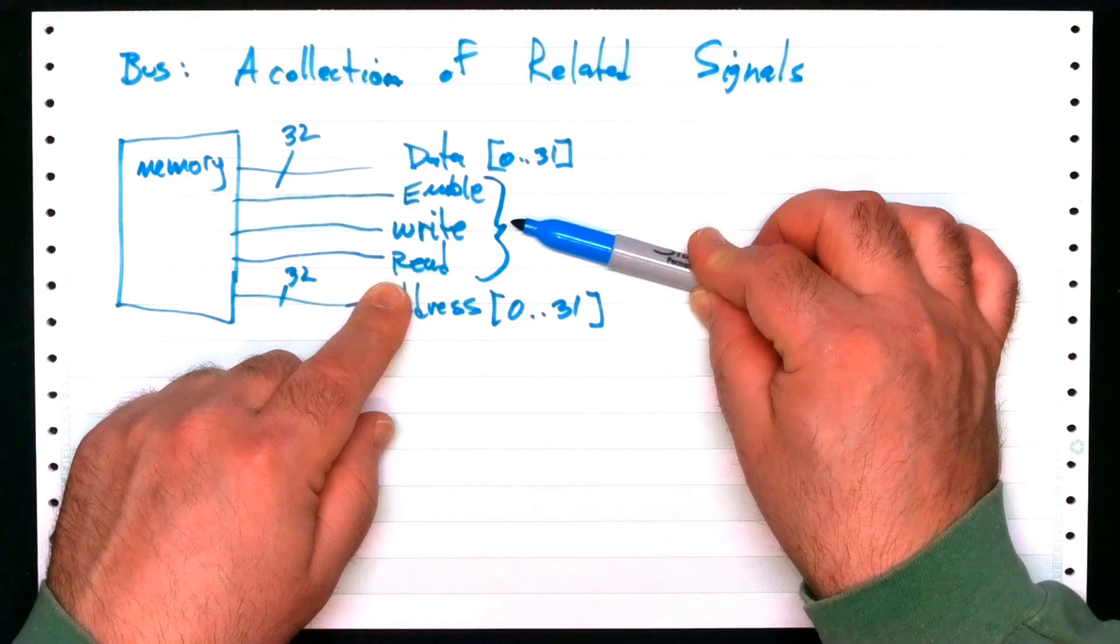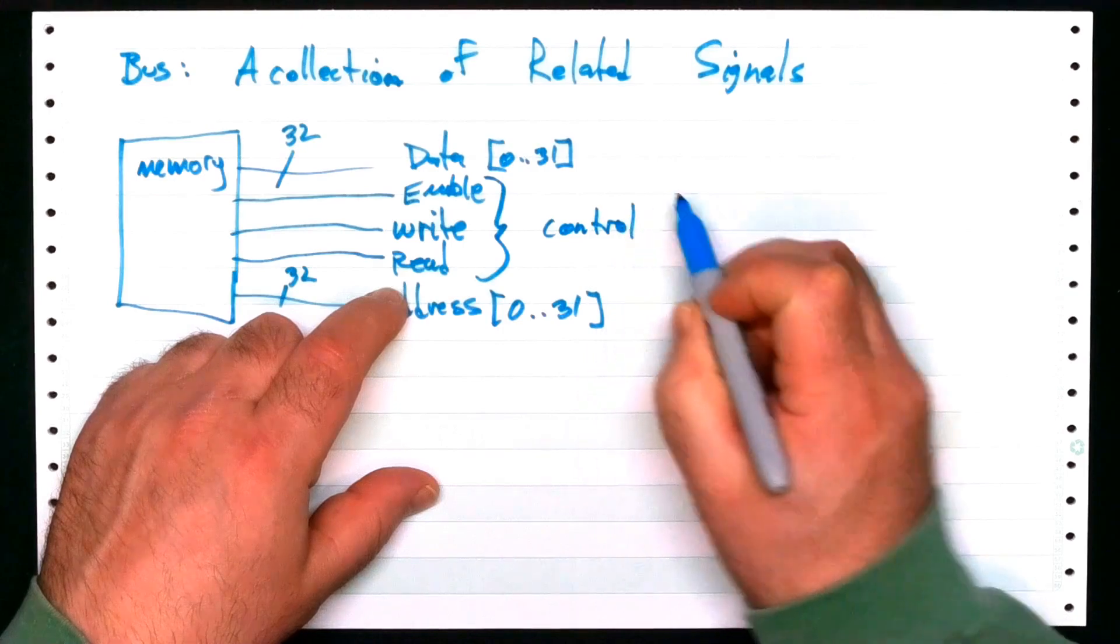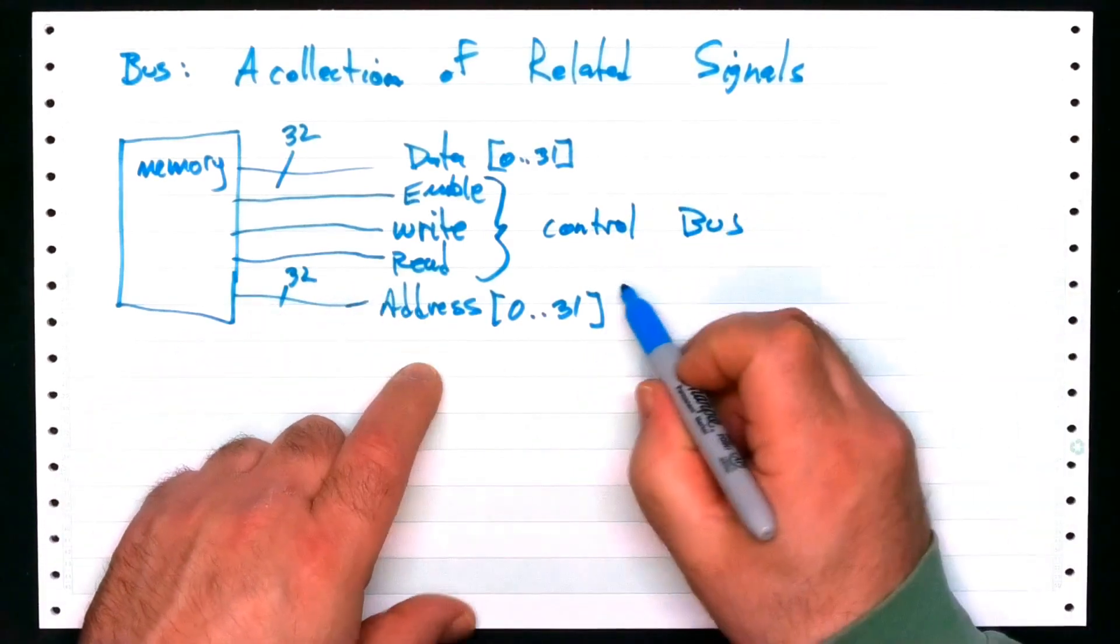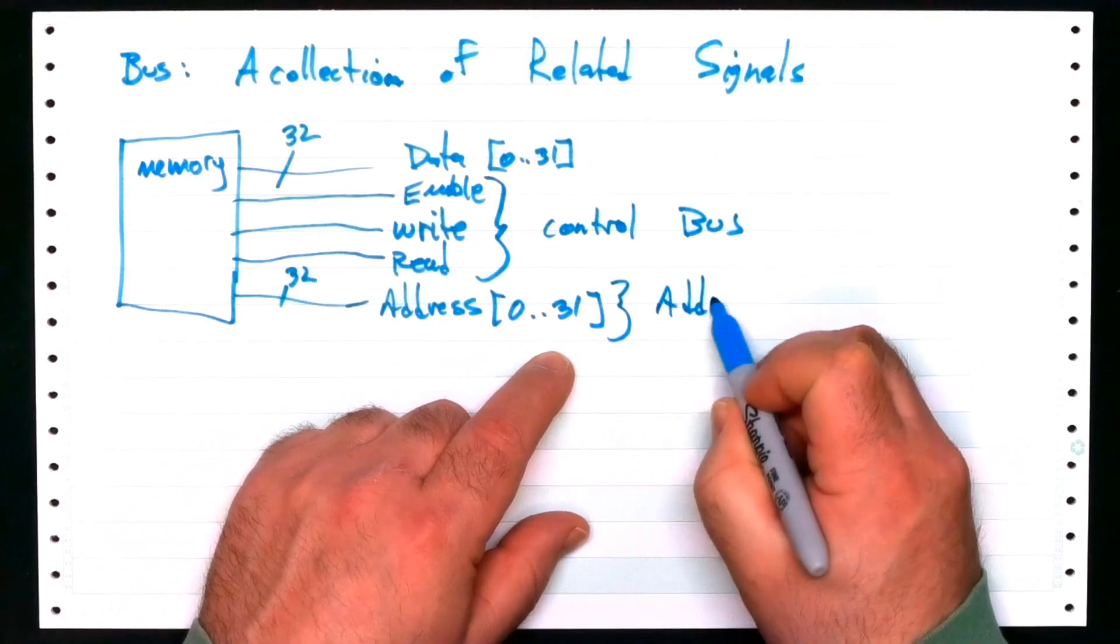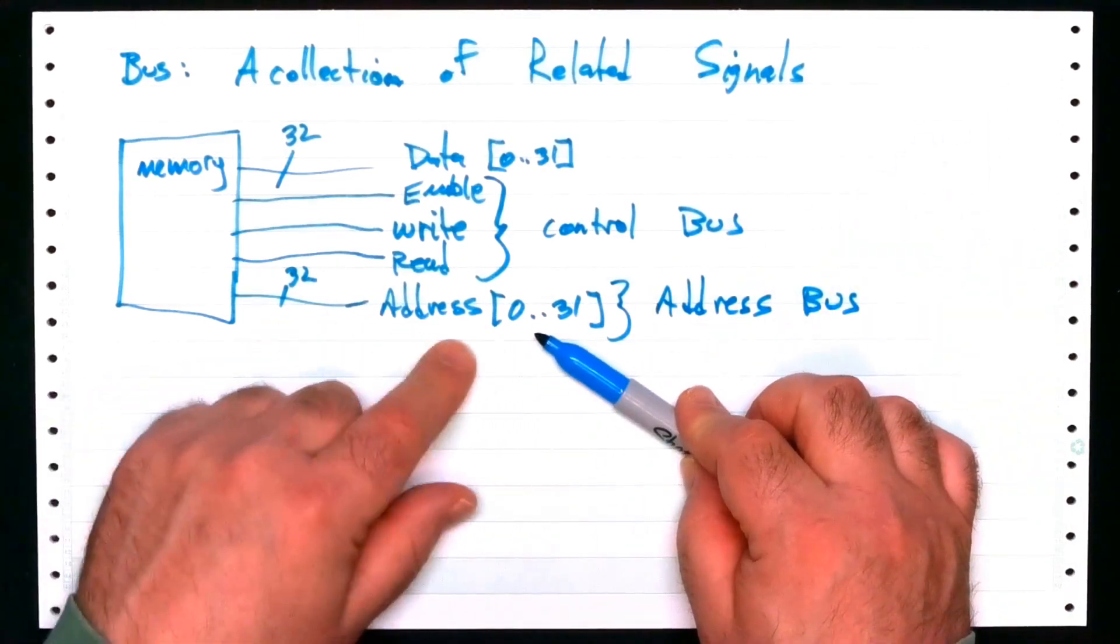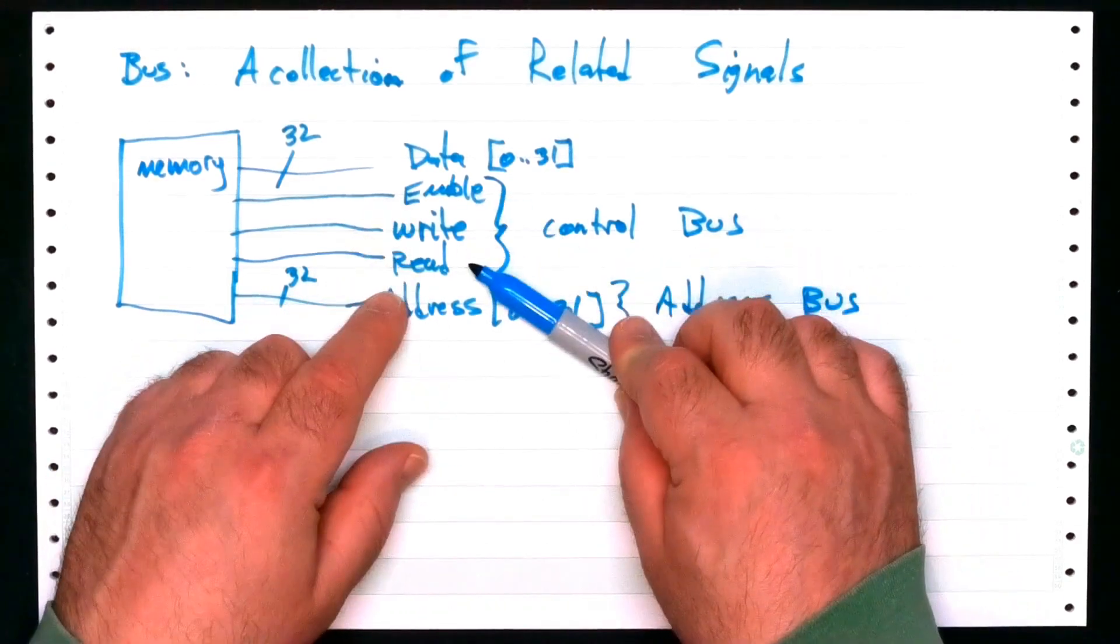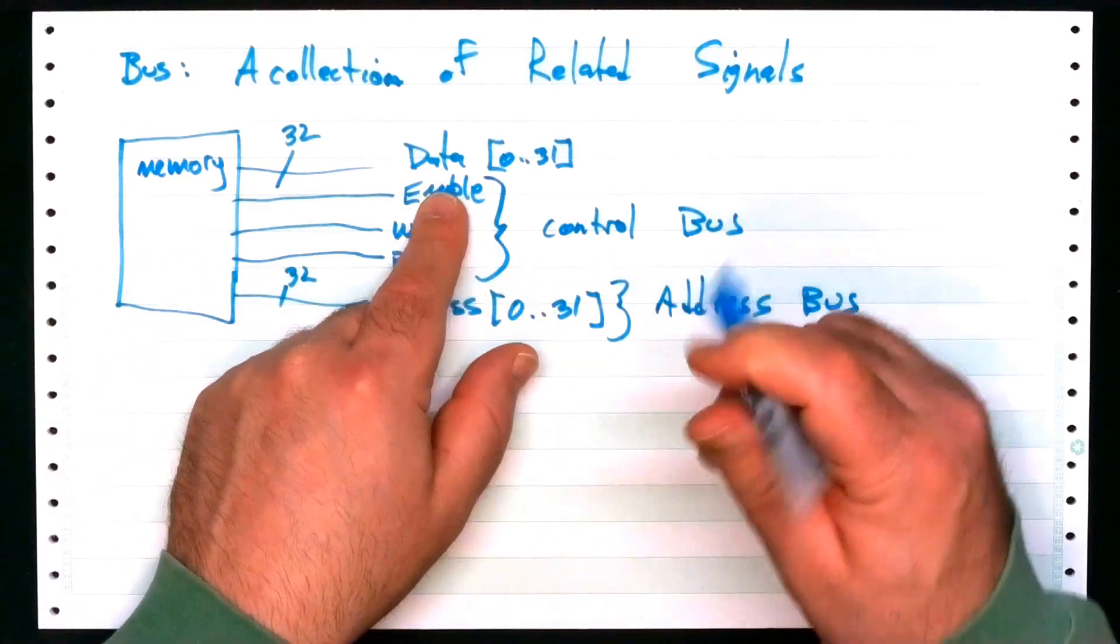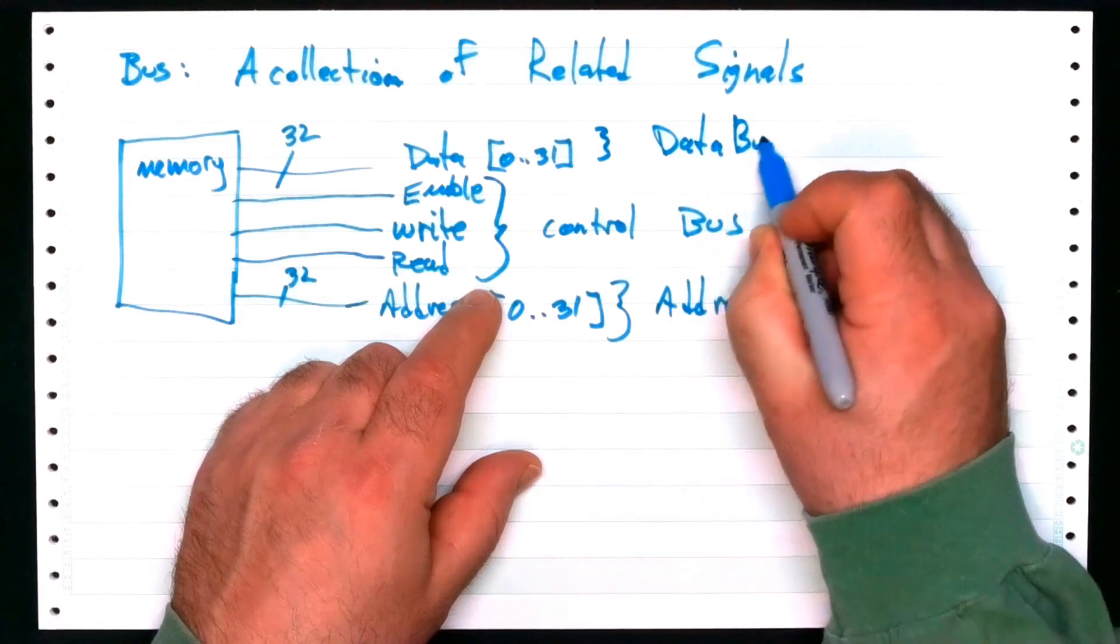Collectively, we can call this a control bus. These 31 bits oftentimes is referred to as an address bus. Why? These are certainly related. All 32 bits of an address, they're related. These signals go together because they have to do with controlling the memory. That's a control bus. What do you suppose this thing is going to be called? That's a data bus.